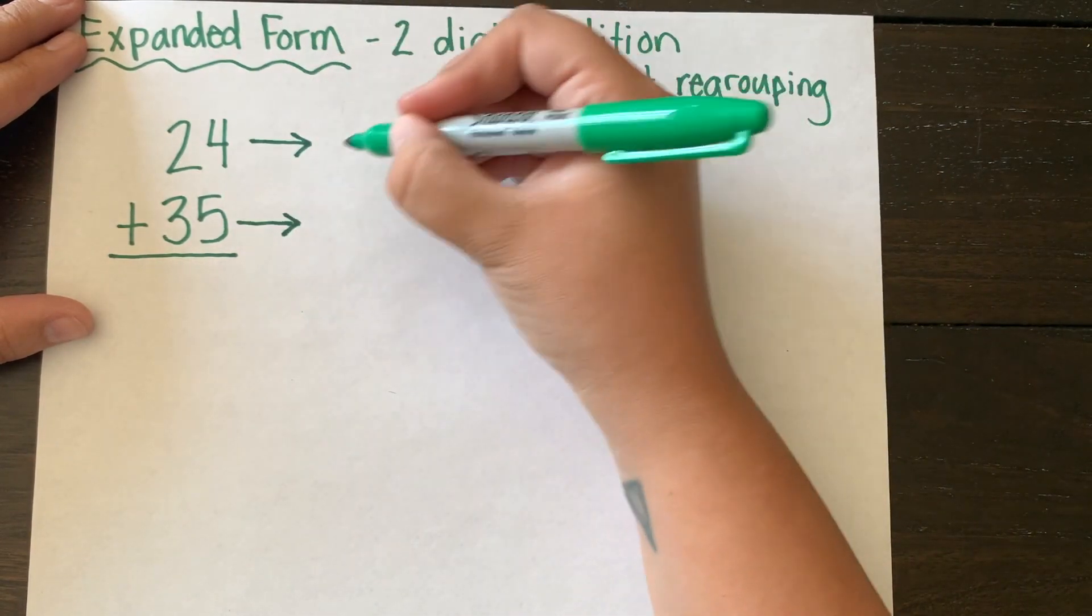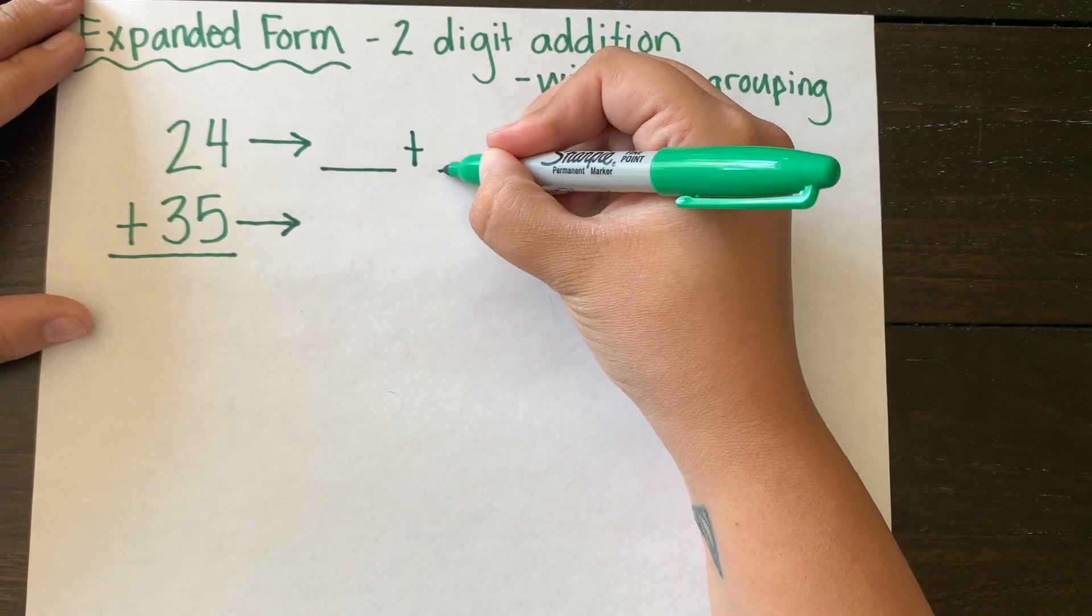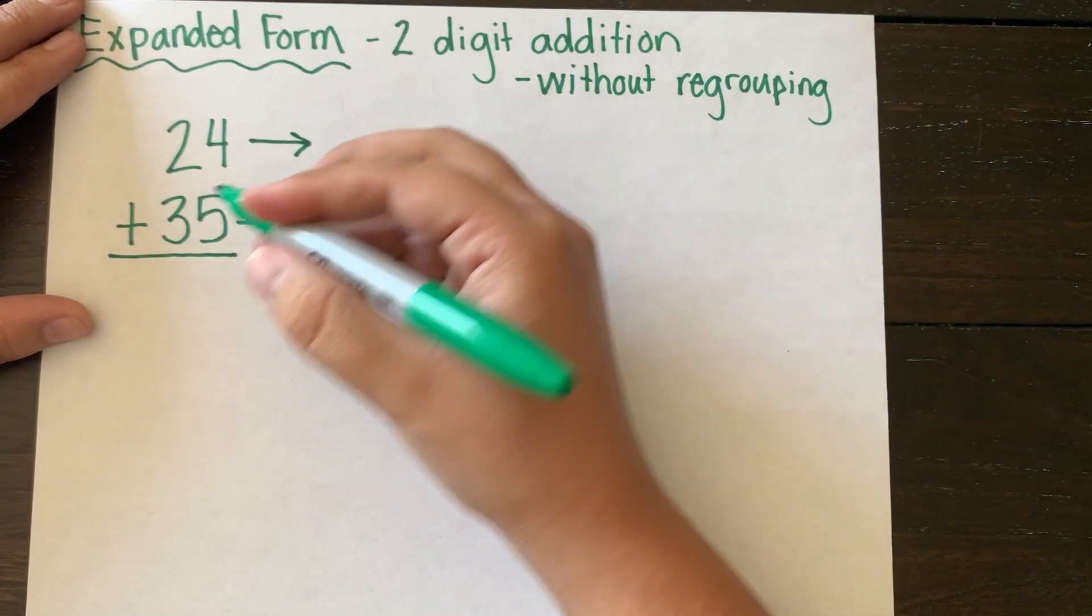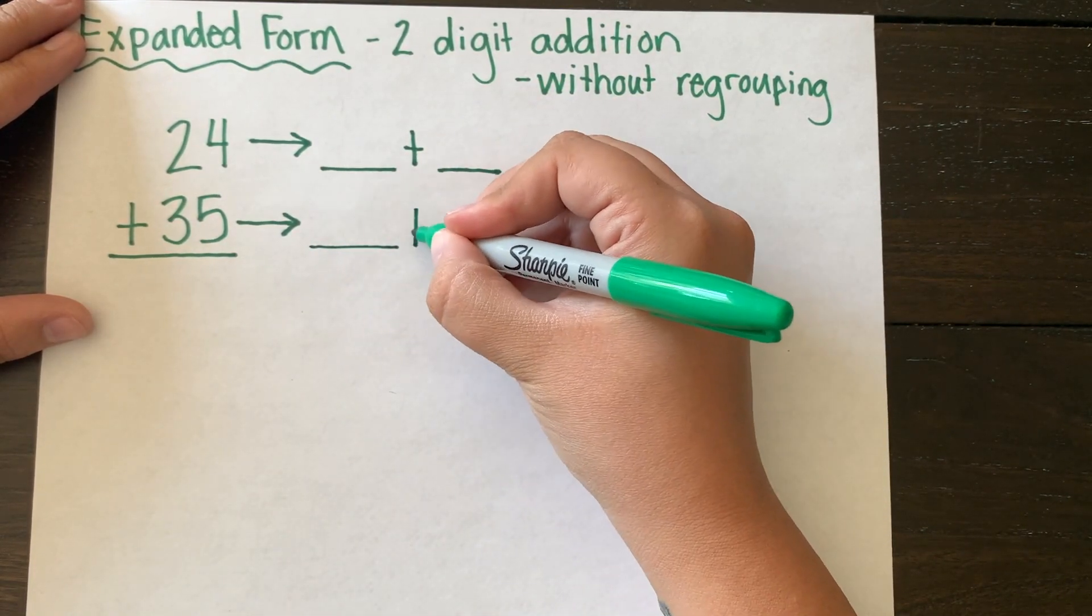Now I see that my number has two digits, so I'm drawing these lines with my plus sign just as placeholders. You do not have to do this step, but if you are still struggling with the strategy, this is a good idea.